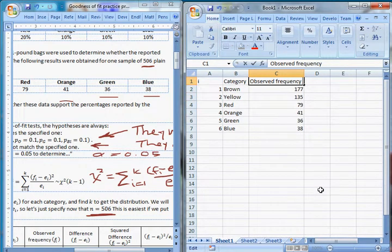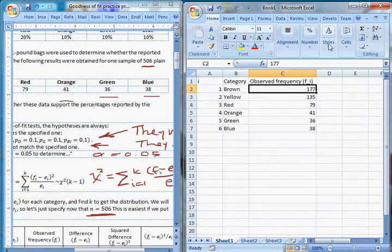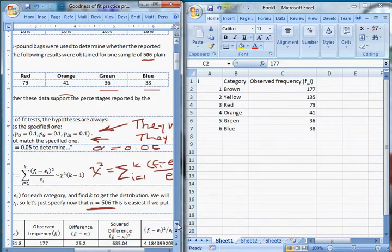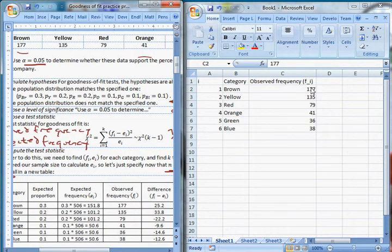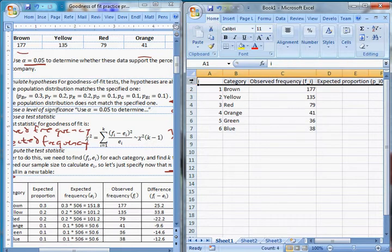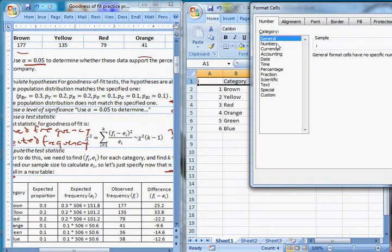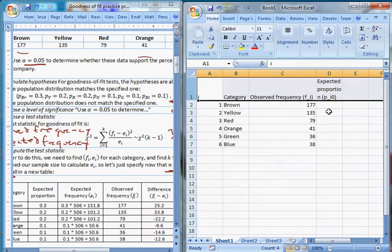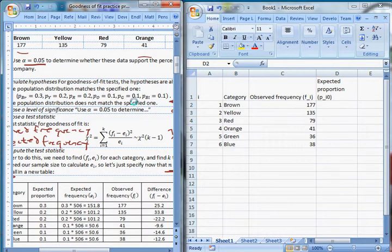This observed frequency is our f sub i. I use underscore for sub when I'm in Excel. So that's our observed frequency. Now we need to calculate our expected frequency. And the easy way to do this is to state our expected proportion under the null. So our expected proportion, which you might call p sub i zero, it's often the abbreviation that I use. I'm just going to wrap these.